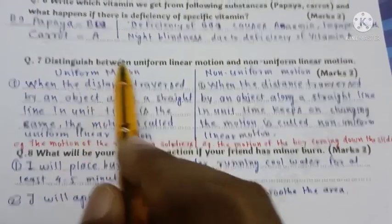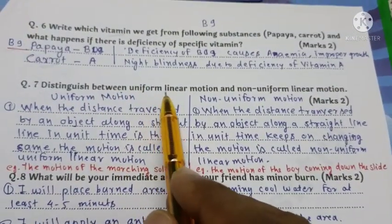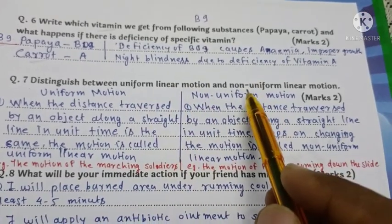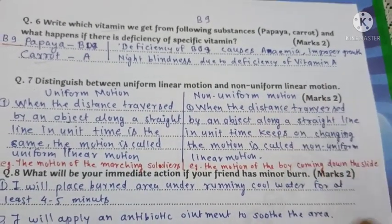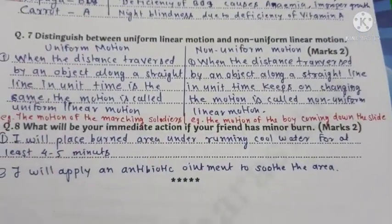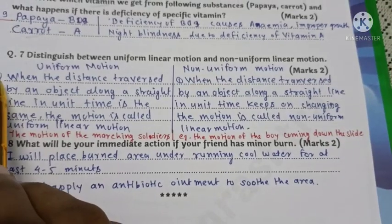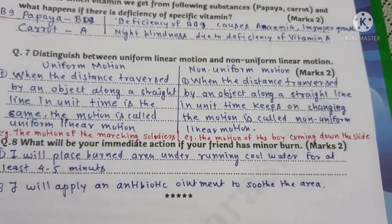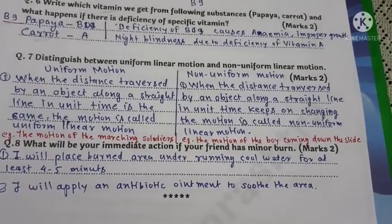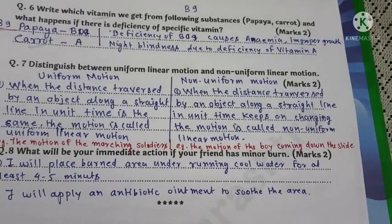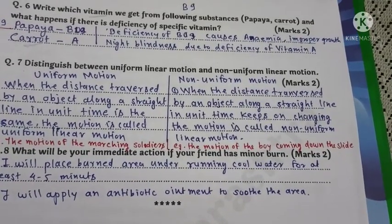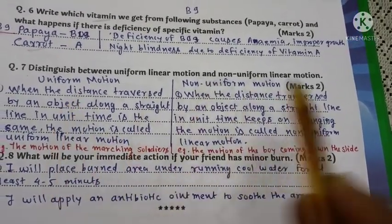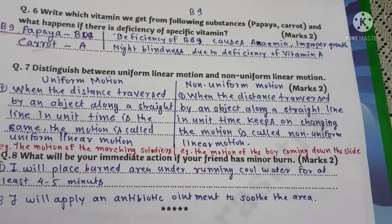Question number 7: Distinguish between uniform linear motion and non-uniform linear motion. Two marks minimum, two points. Give definitions of both uniform motion and non-uniform motion.